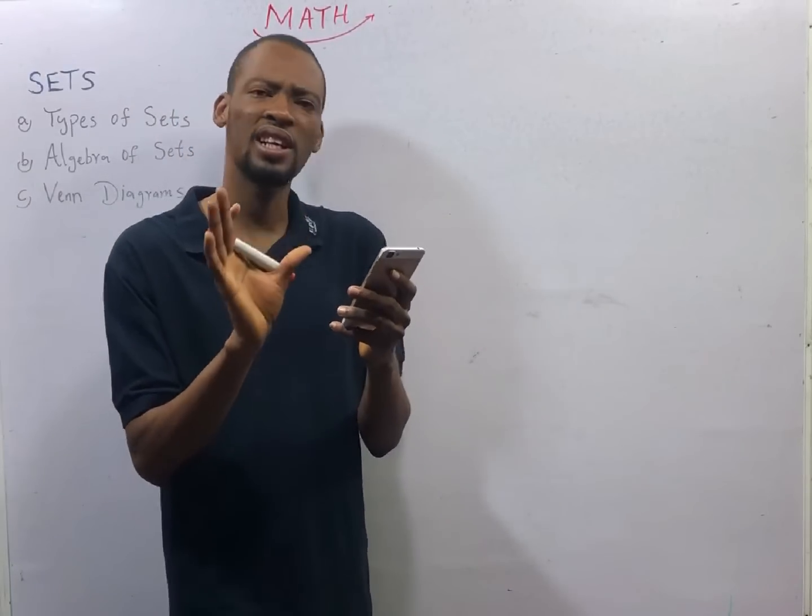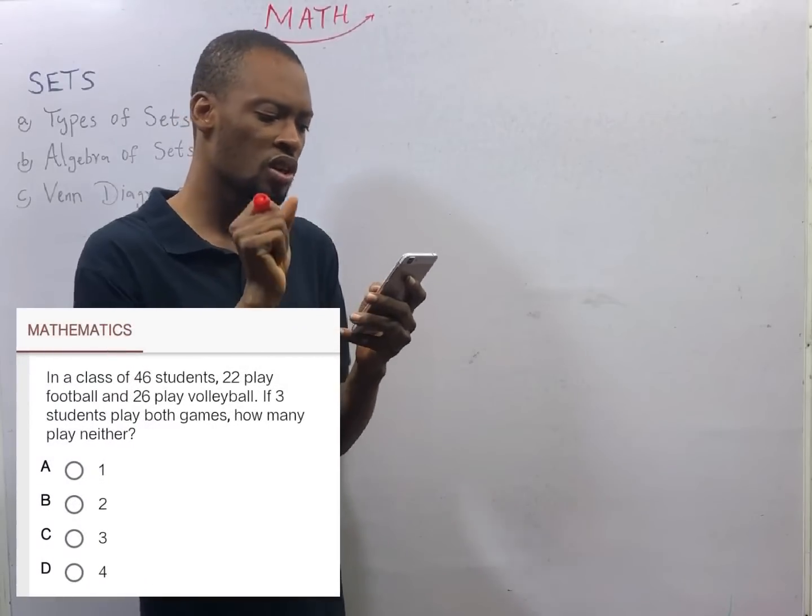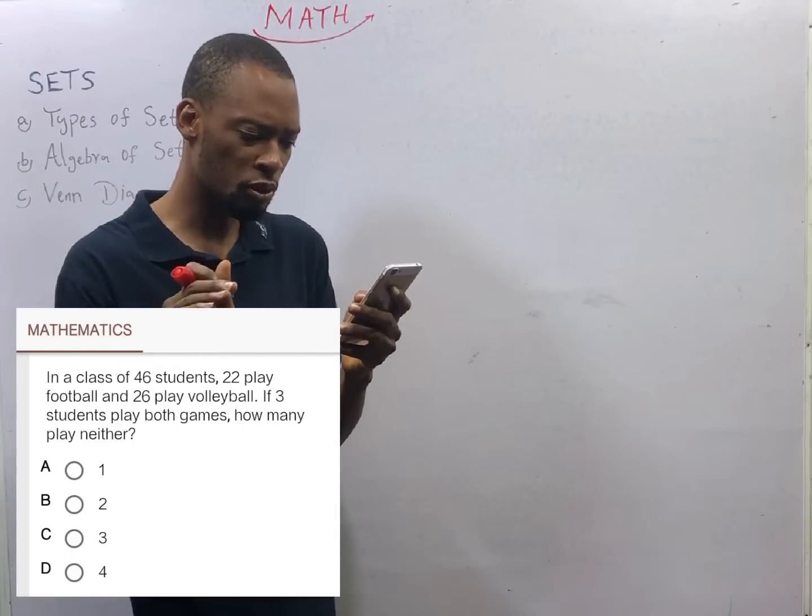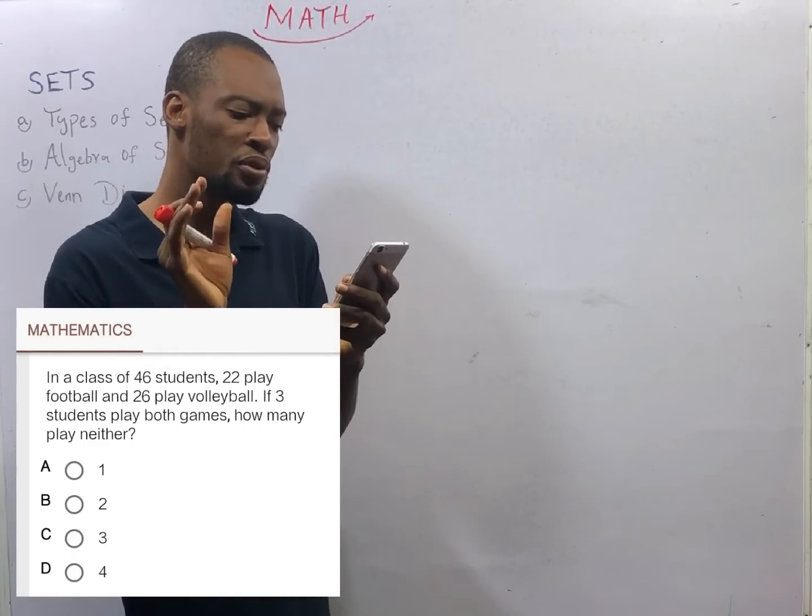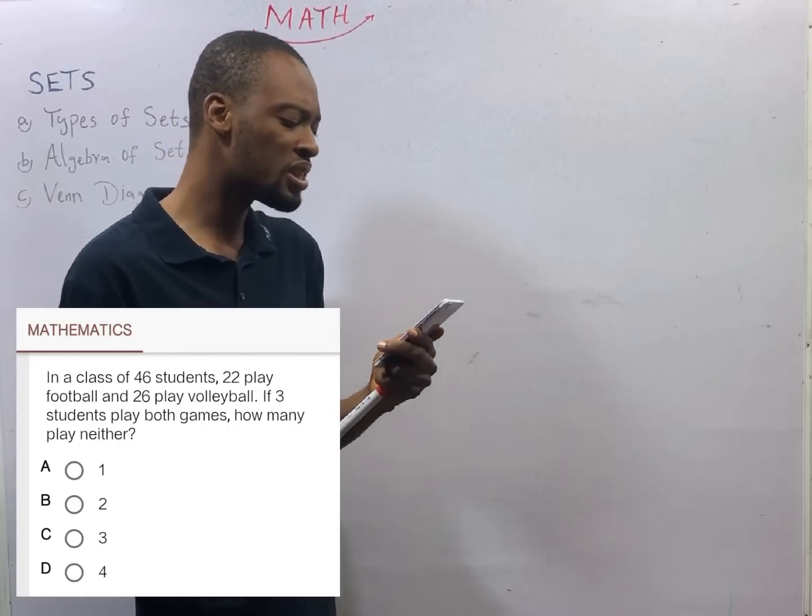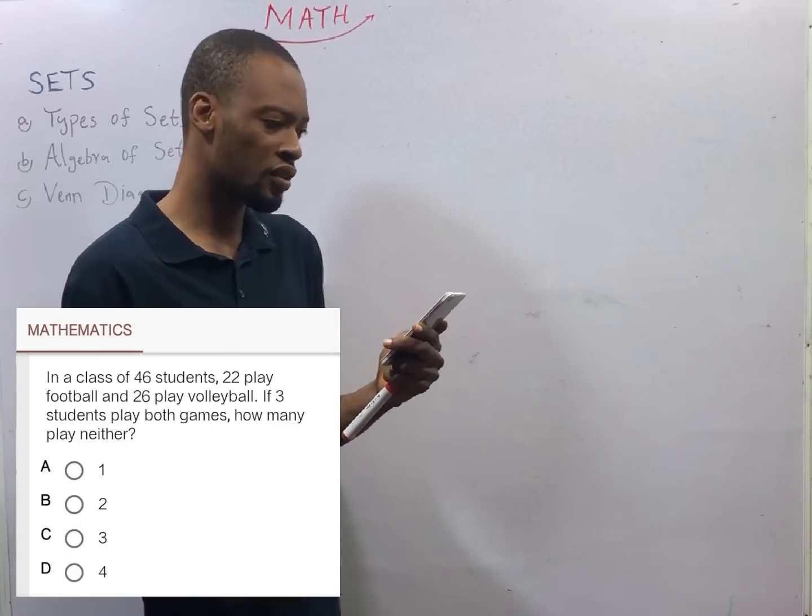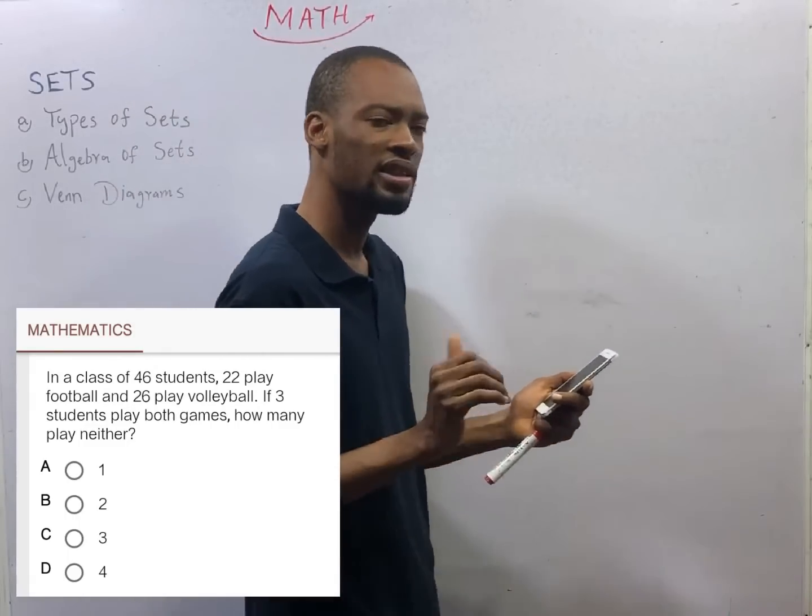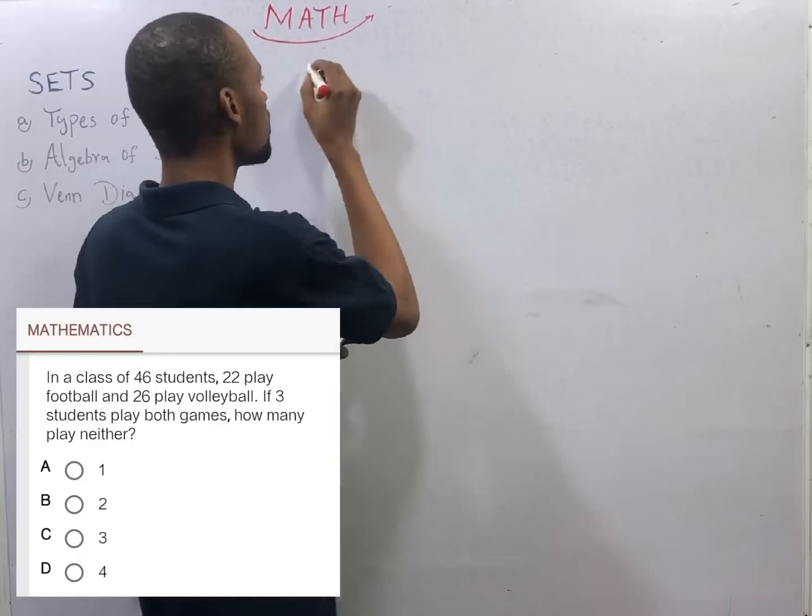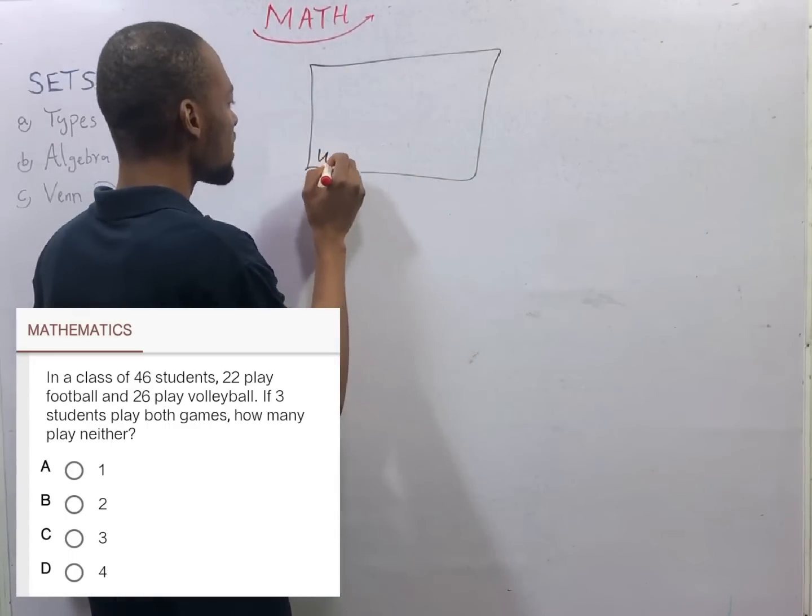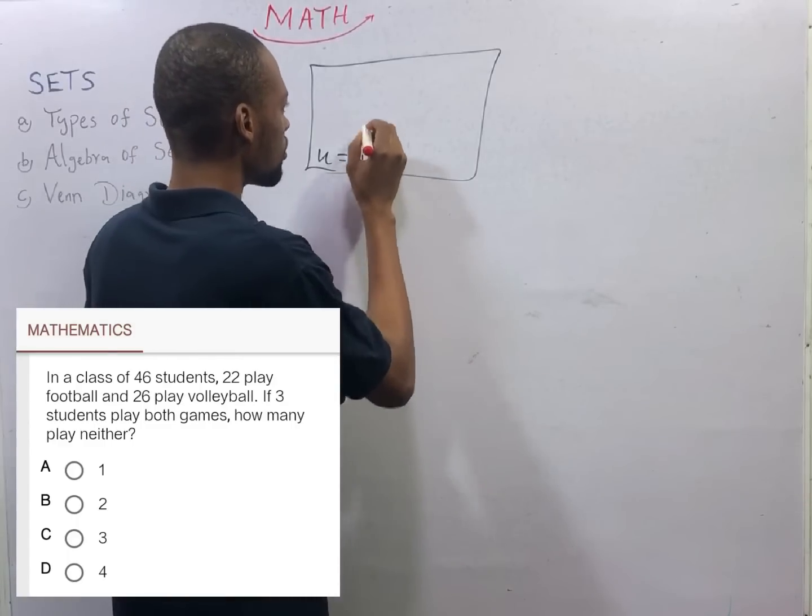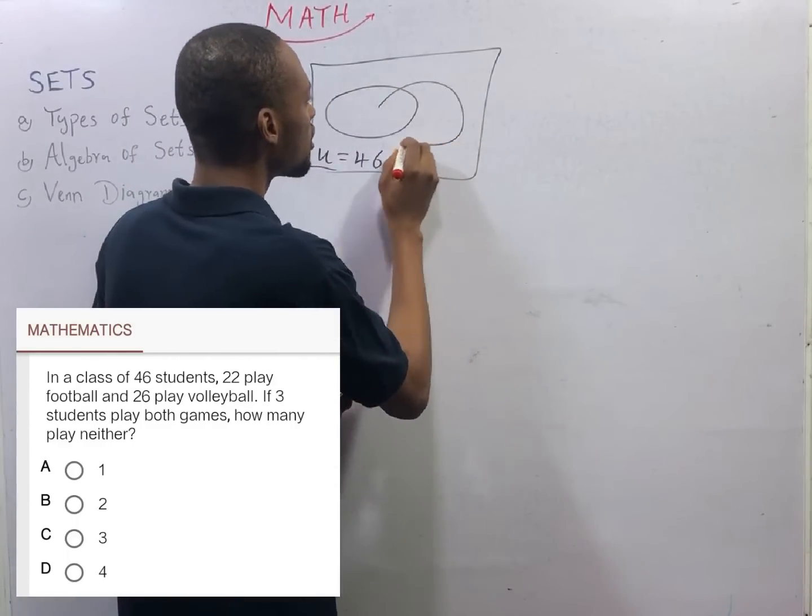In a class of 46 students, 22 play football and 26 play volleyball. If 3 students play both games, how many play neither? Which means, how many don't play football and don't play volleyball? For this question, it is clear that we are dealing with two sets. And for two sets, this is the Venn diagram, where your universal set is equal to the total number. In this case, 46 students. So we have the first set here, the second set here.